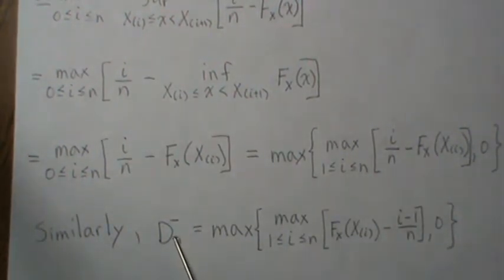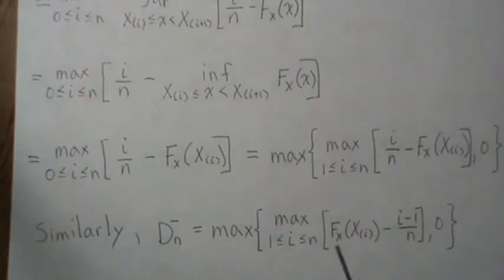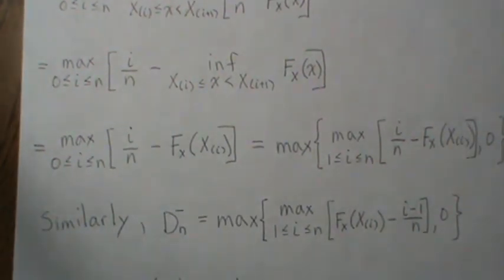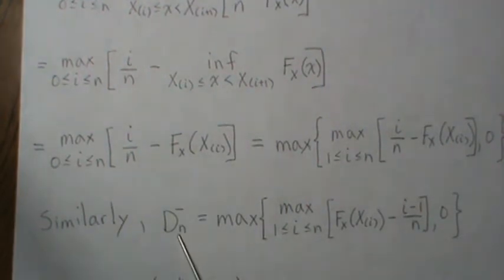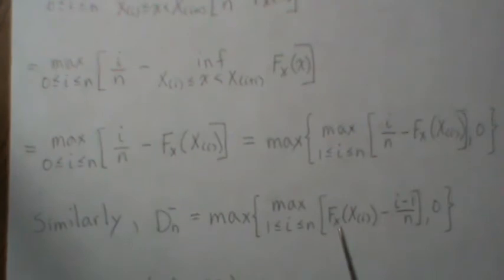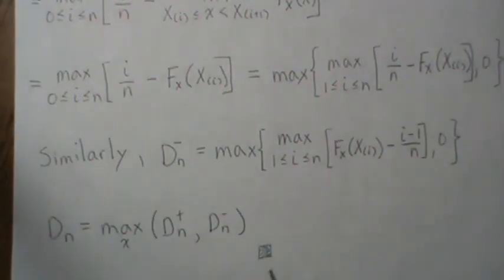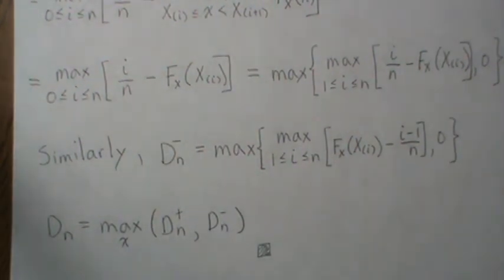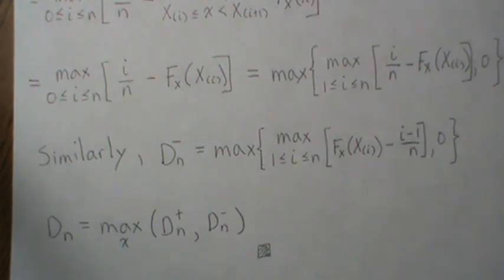Similarly, for D_n−, looking at the difference F(x) minus S(x), it can be shown to reduce to the same form — the maximum of the uniform-order-statistic-based difference or zero. Both D_n+ and D_n− are distribution free because they depend only on Uniform(0,1) order statistics. Therefore, D_n, the maximum of these, is also nonparametric and distribution free. That's all I have for today — I find this pretty fascinating, hope you did too. Like the video and subscribe so you don't miss the next one. Thank you, bye bye.